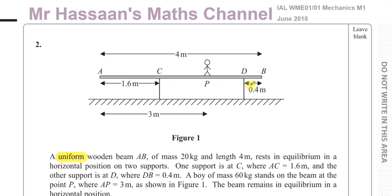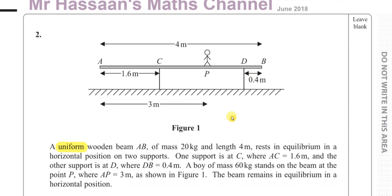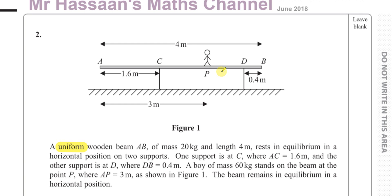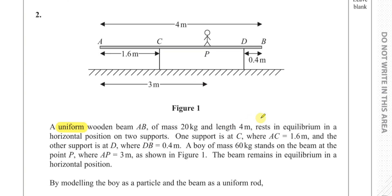The beam is in a horizontal position on two supports C and D, where C is 1.6 meters from A and D is 0.4 meters from the end. A boy of mass 60 kilograms stands at point P where AP equals three meters, as shown in figure one. We model the boy as a particle and the beam as a uniform rod.